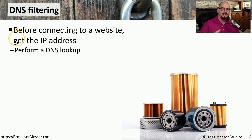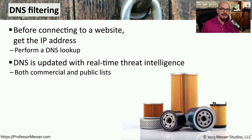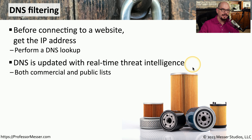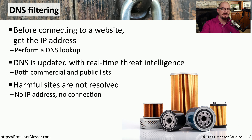There are many domain names that are known to have questionable content or may simply contain malicious code. In those cases, we can configure the DNS to not provide the user with the IP address of that site. All of this information is automatically updated in the DNS server using real-time threat intelligence. There are both commercial lists and publicly available lists that you could use for DNS filtering. This means that a user who makes a request to visit a malicious site will not receive the IP address of that site from the DNS server — instead, they are either provided with a default IP address or no IP address at all, and the connection is simply not made.